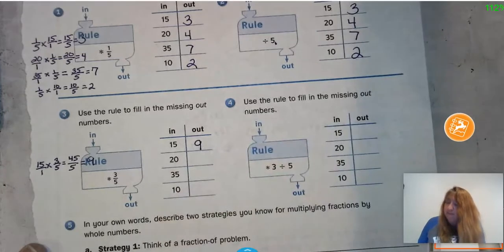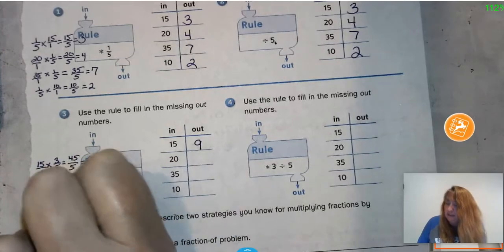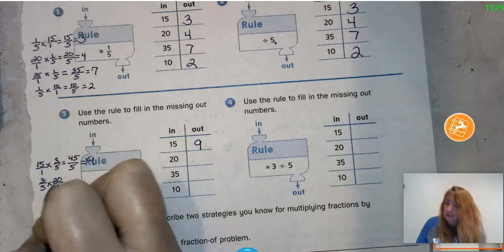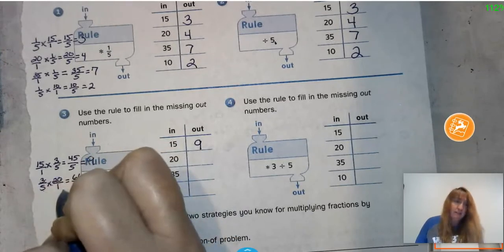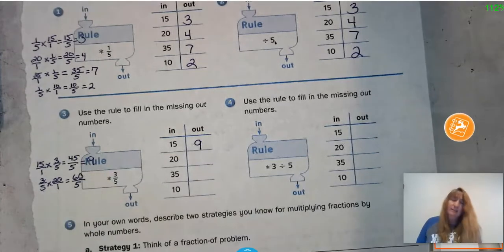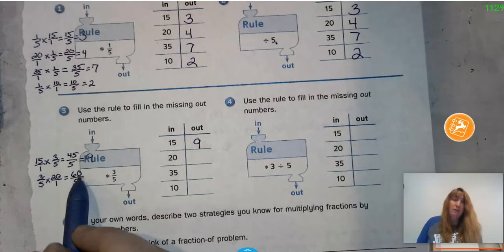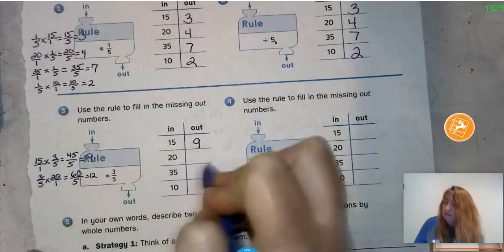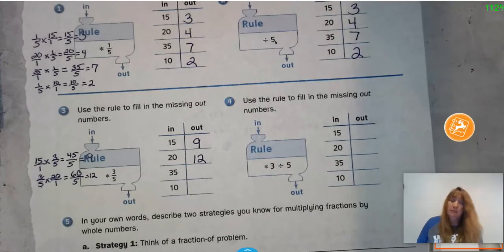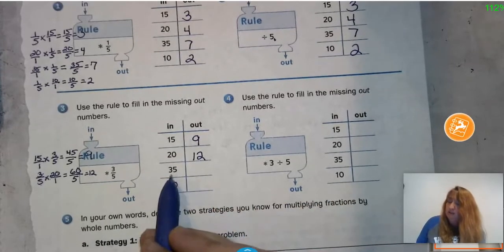Now 3/5 of 20: 3 times 20 is 60, and 5 times 1 is 5. What is 60 divided by 5? We know 5 times 10 is 50, and 5 times 12 is 60, so 60 divided by 5 is 12. Remember you could also find 1/5 first and then take 3 of those to figure it out.